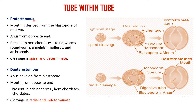In protostomes, after cleavage and gastrulation, the blastopore leads to the formation of the mouth, and opposite to this mouth, the anus is formed. Protostomes are present in non-chordates like flatworms, roundworms, annelids, mollusks, and arthropods. In this case, the cleavage is spiral and determinate — determinate means we know which part will form which particular organ.